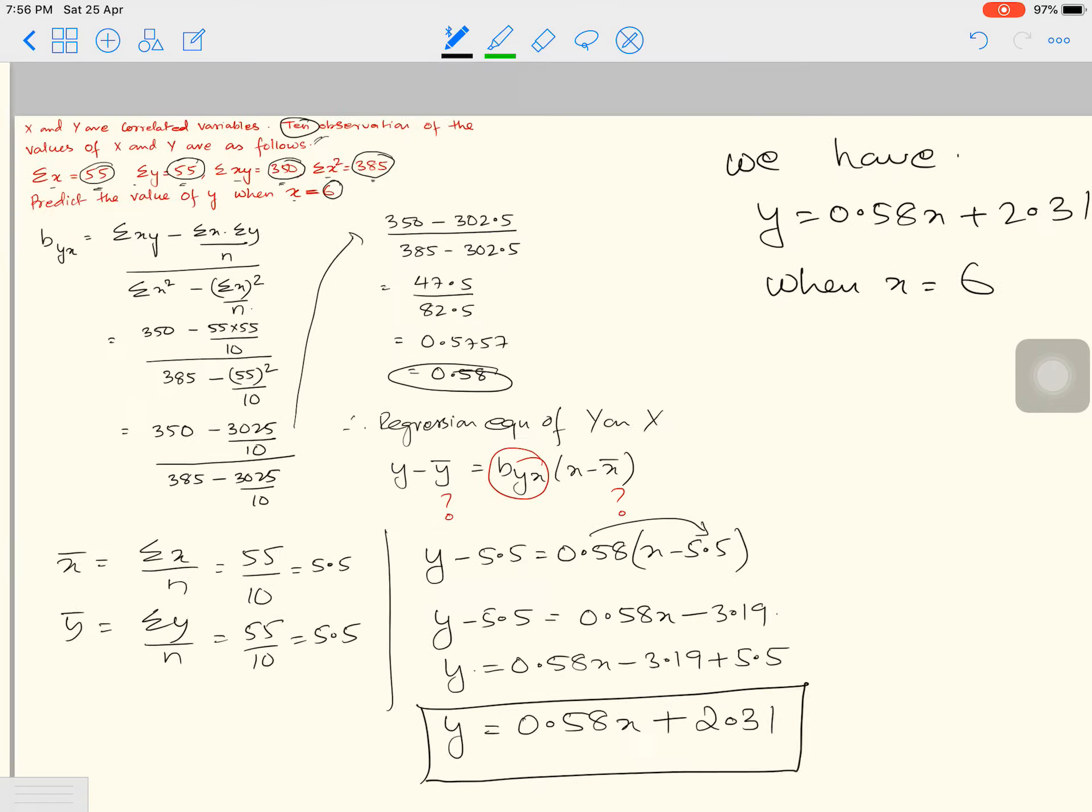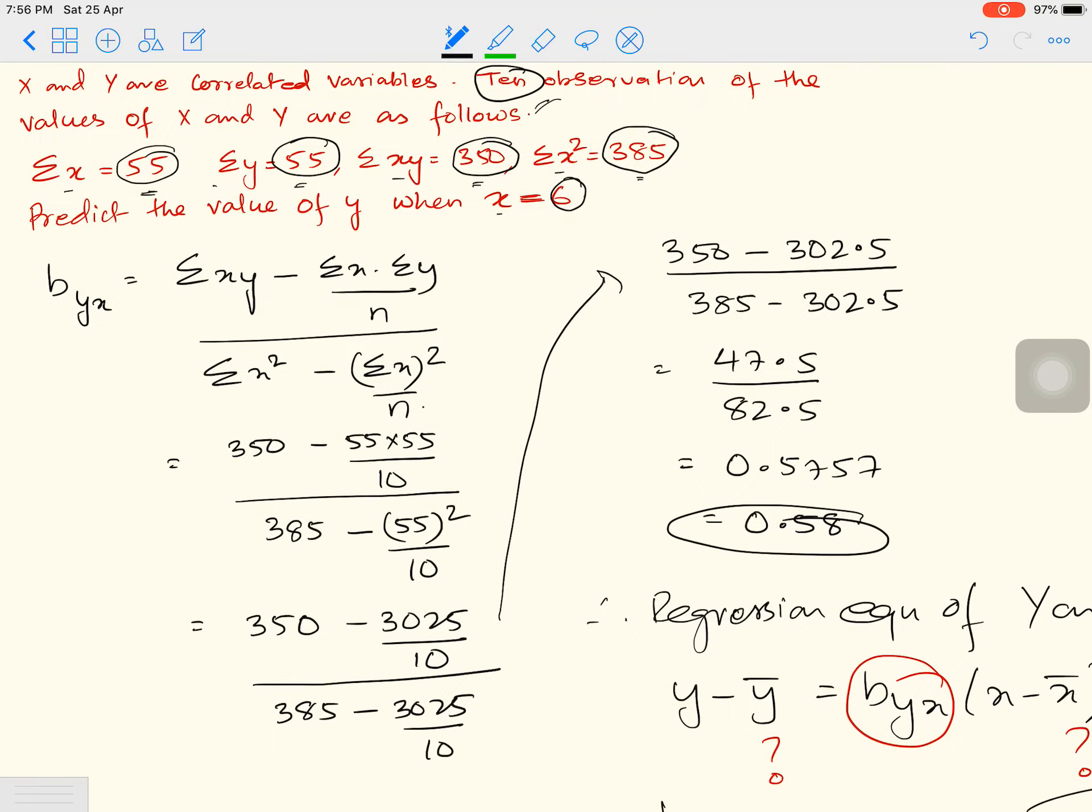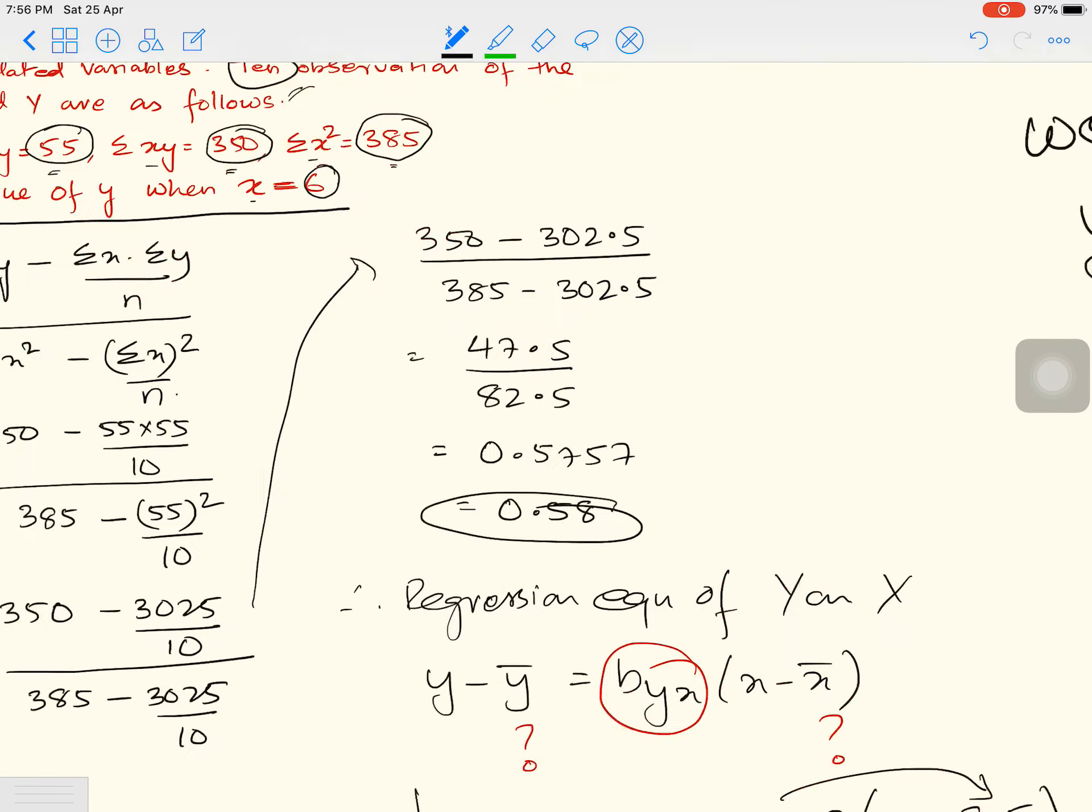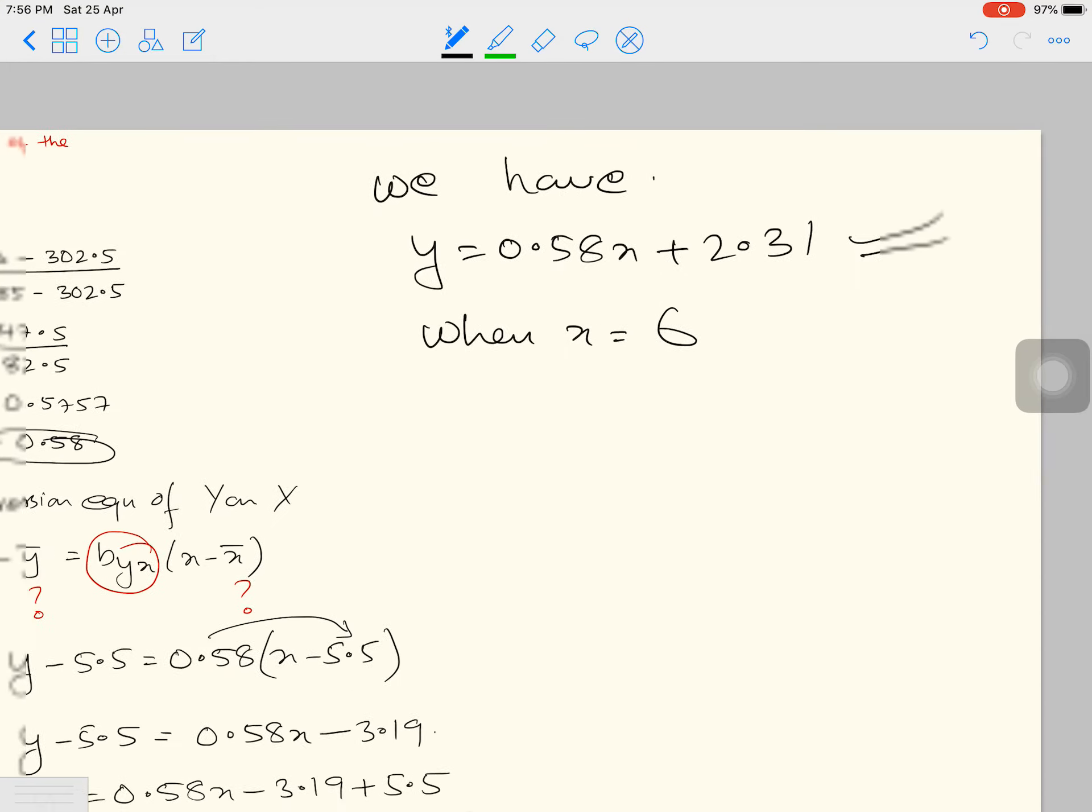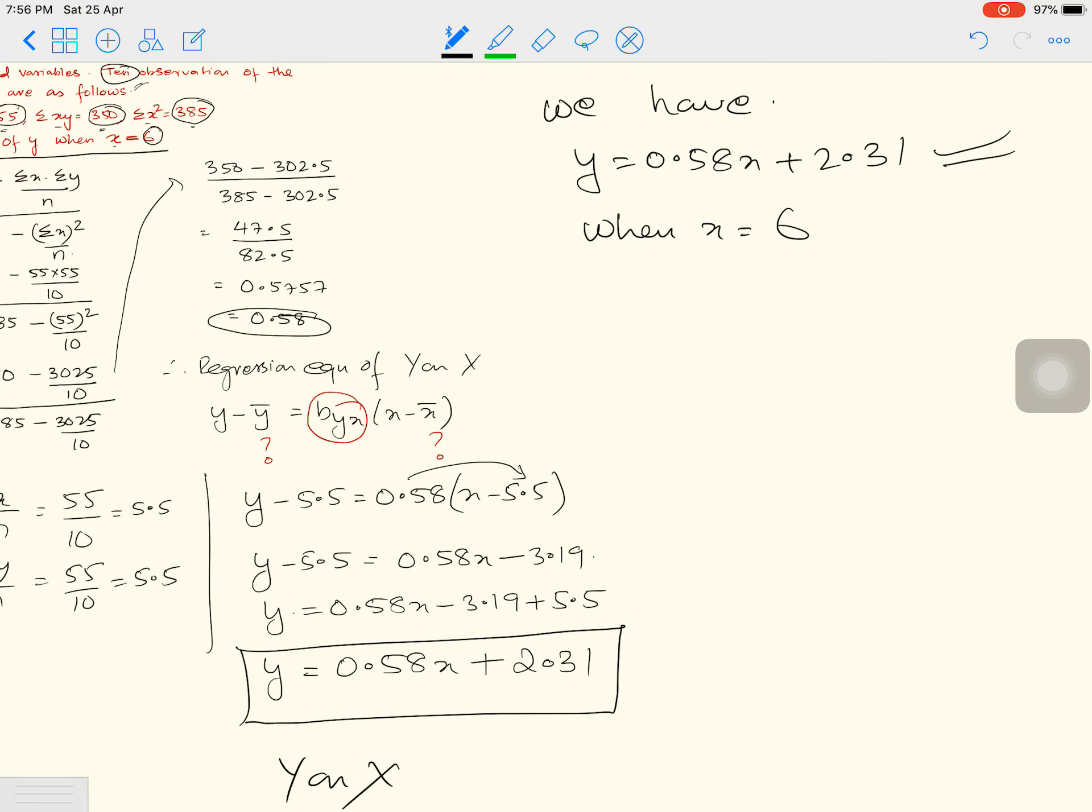Look at the question: predict the value of Y when X equals 6. So when X equals 6, let's see what will be Y. Y will be equals to 0.58 into 6 plus 2.31. That would give me 3.48 plus 2.31. And when you simplify it, that is 5.79. So that would be your answer.